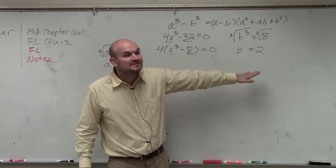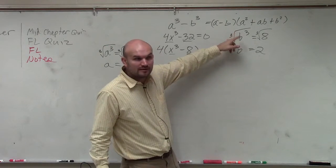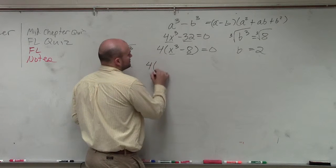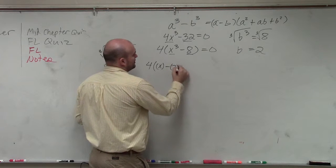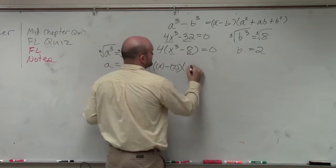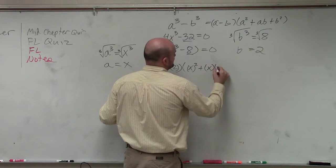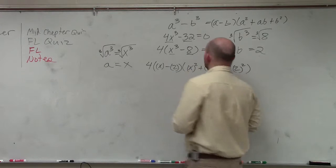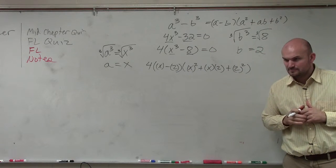So now, all I'm simply going to do is plug in my a and b into the factored formula, and that's it. That's really all you have to do. So therefore, I have 4 times a, which is x. And I'm going to put them in parentheses as I enter them in. x minus 2 times x squared plus x times 2 plus 2 squared. Does everybody see how I enter those in, and I put parentheses around them?